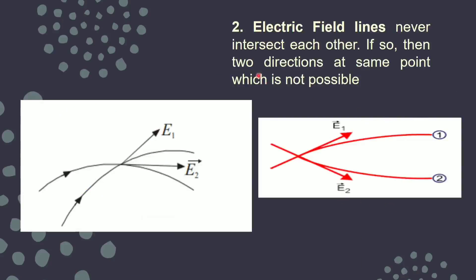Second property says that electric field lines never intersect each other. Because if the field lines are intersecting, they meet at a point and at that point there would be two directions of the electric field, which is not possible — at one point there can be only one direction of the electric field. So no two lines can cross each other.